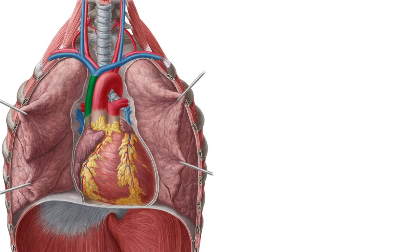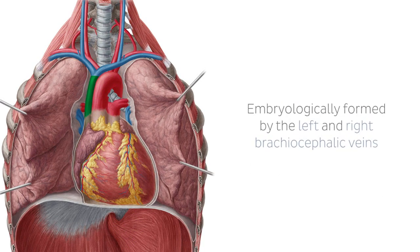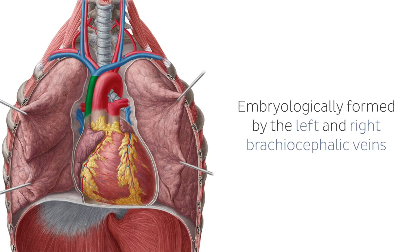Embryologically, the SVC is formed by the left and right brachiocephalic veins, sometimes called the innominate veins, which also receive blood from the upper limbs, eyes, and neck.